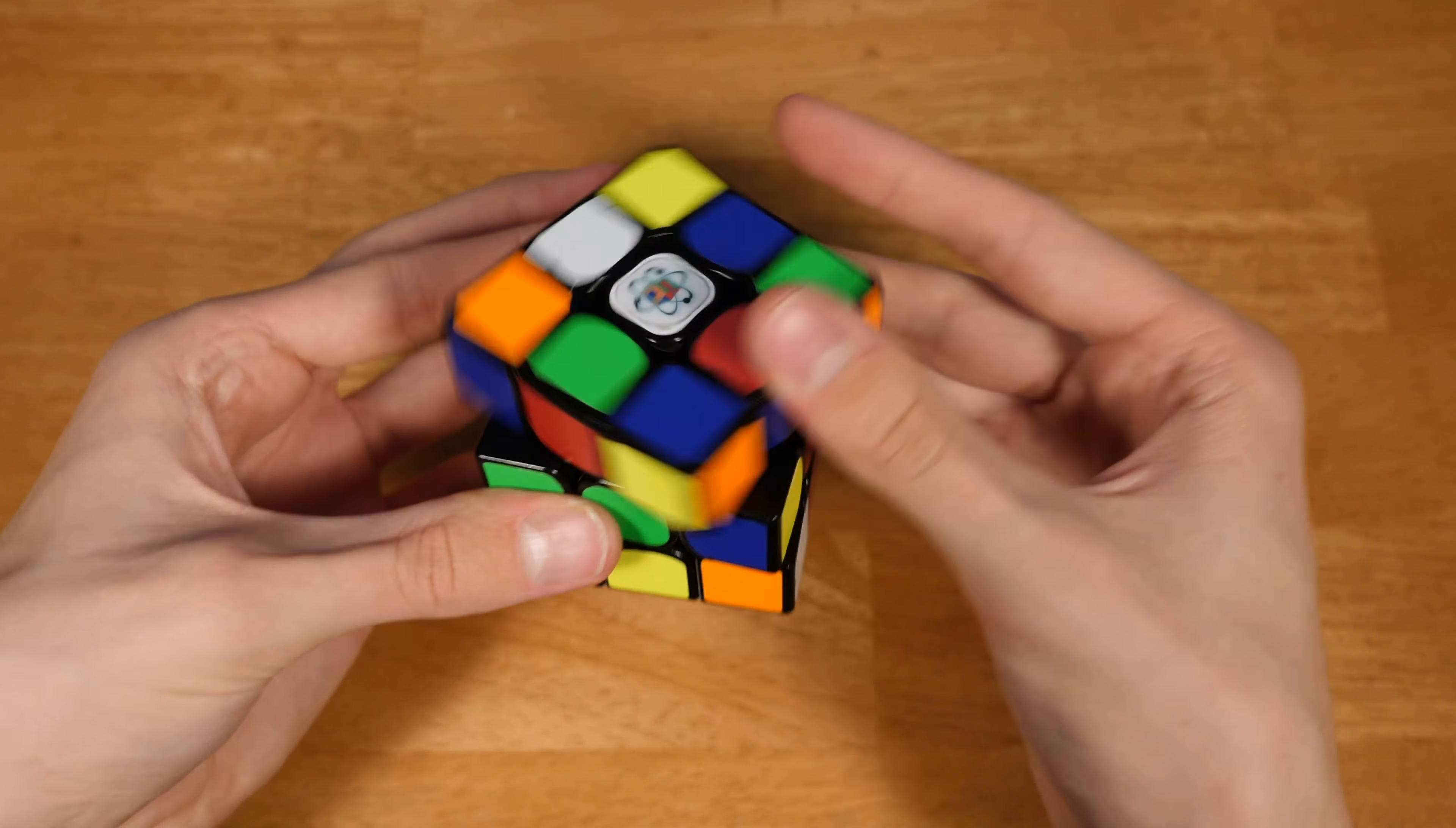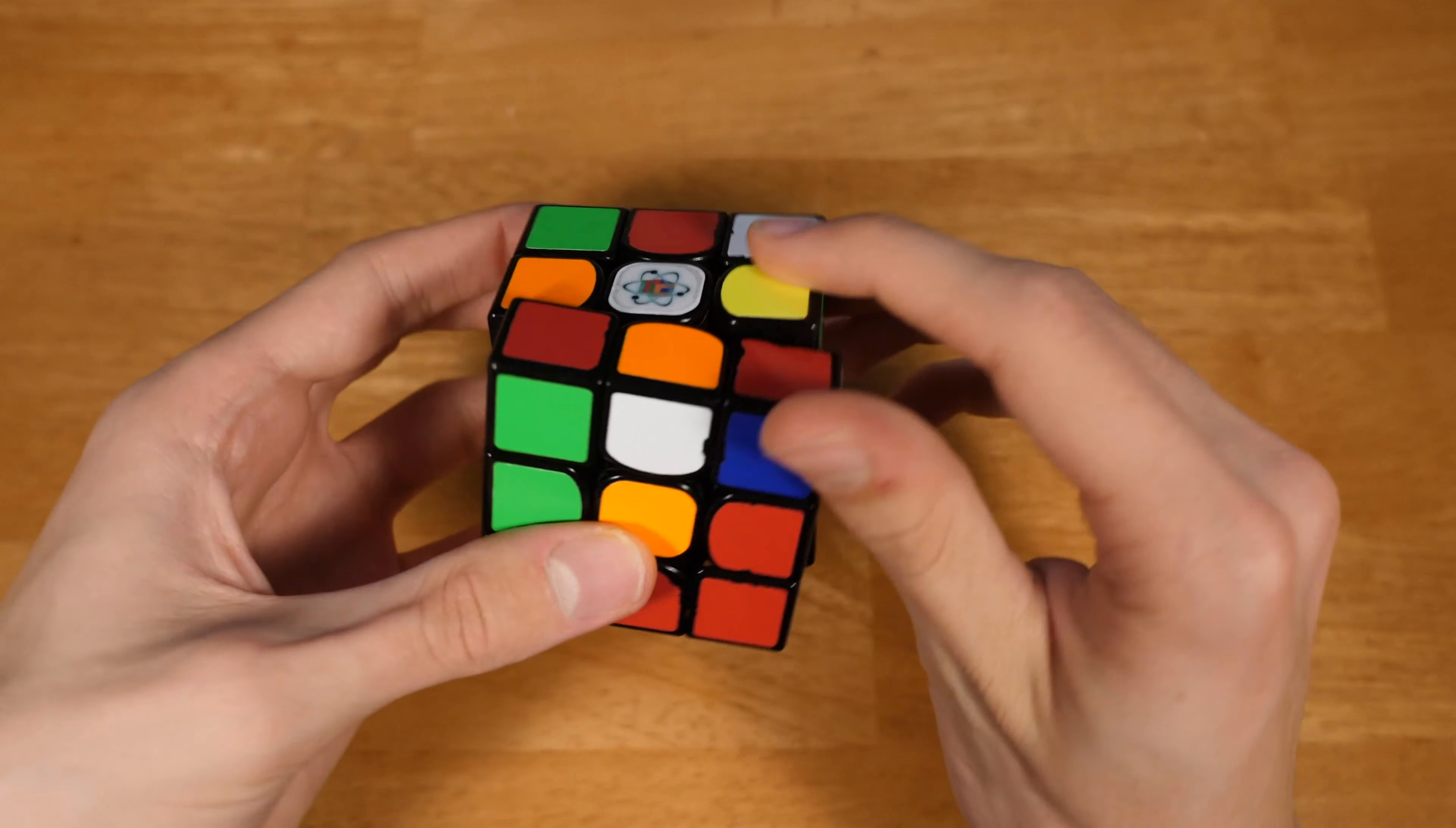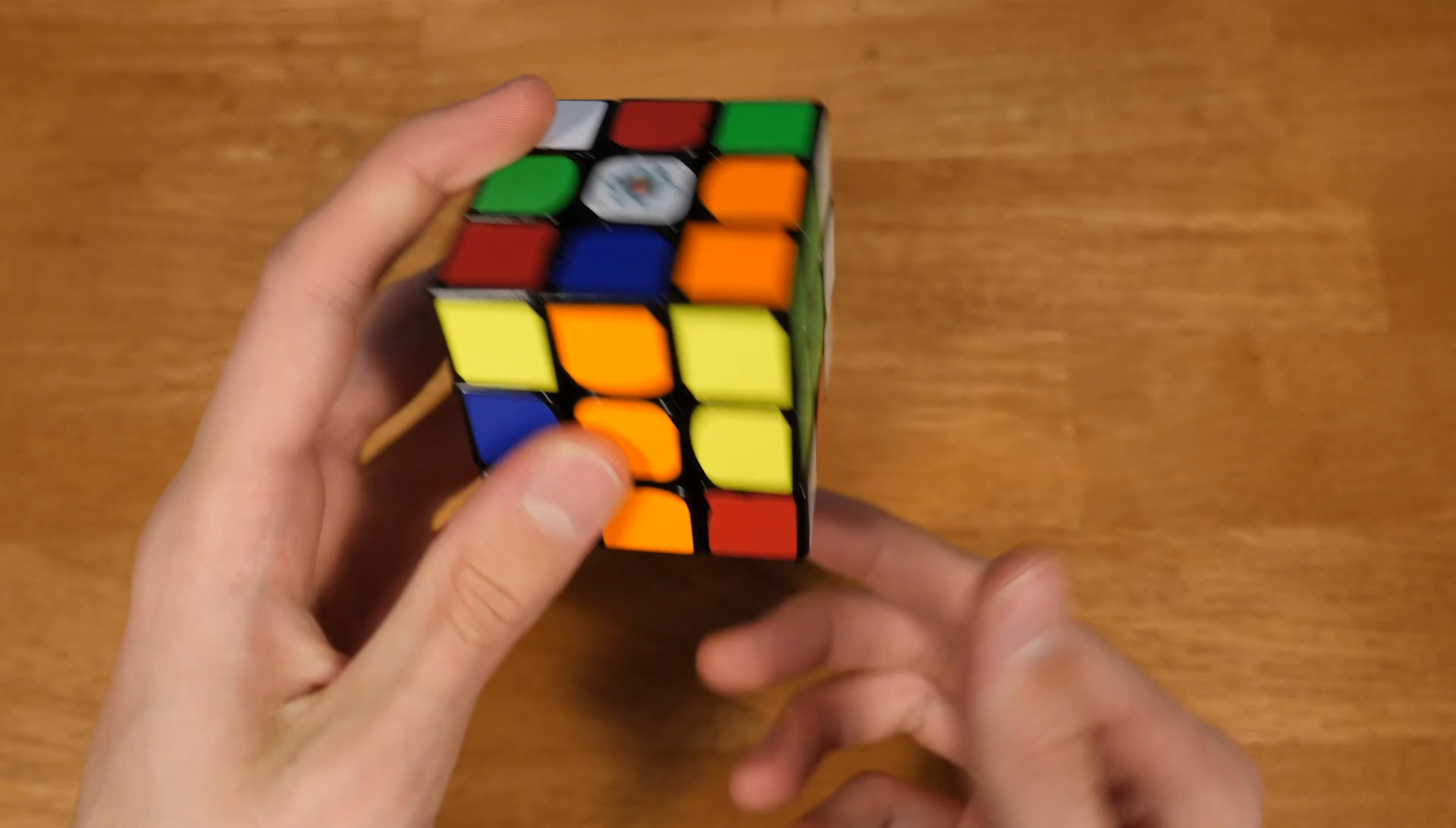And it's important to know those types of cases. So let's see. X-cross, first F2L pair, going right into the second F2L pair. You can see these two.